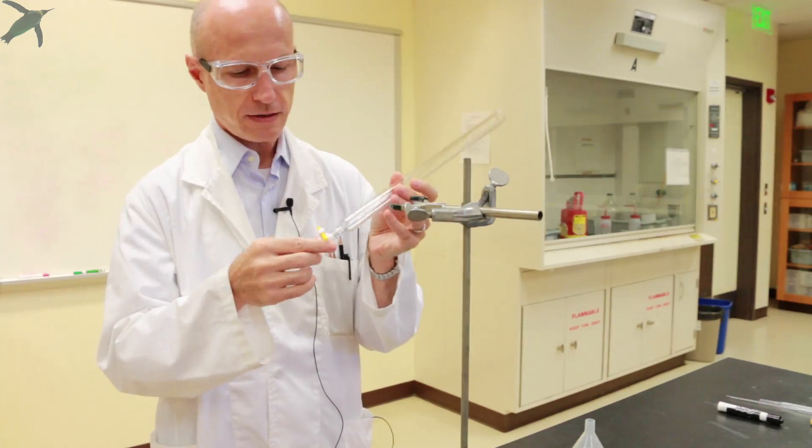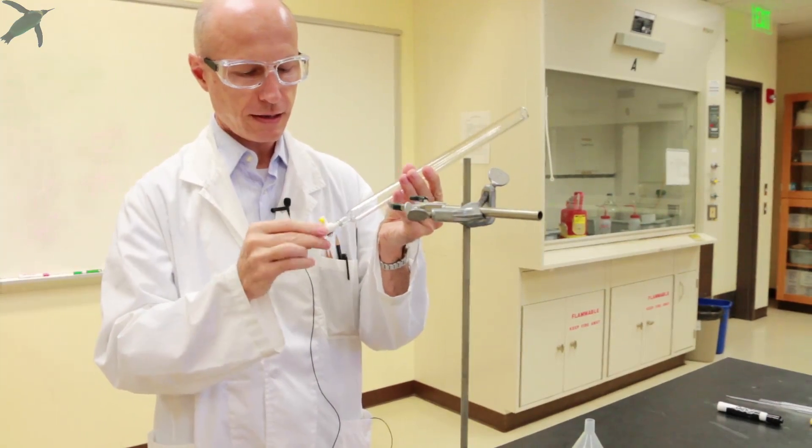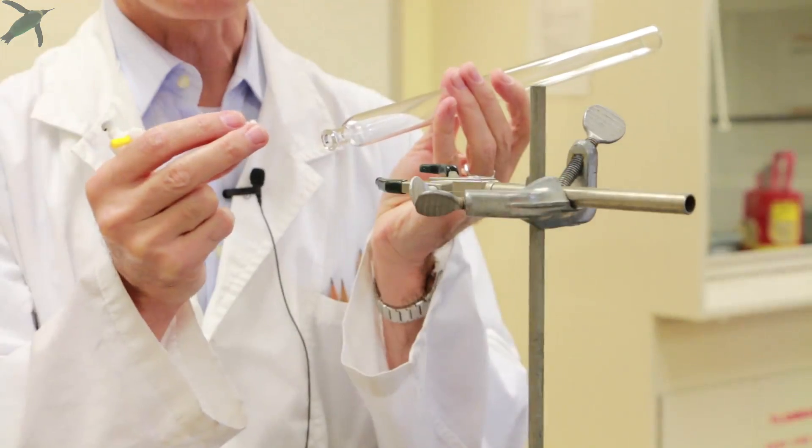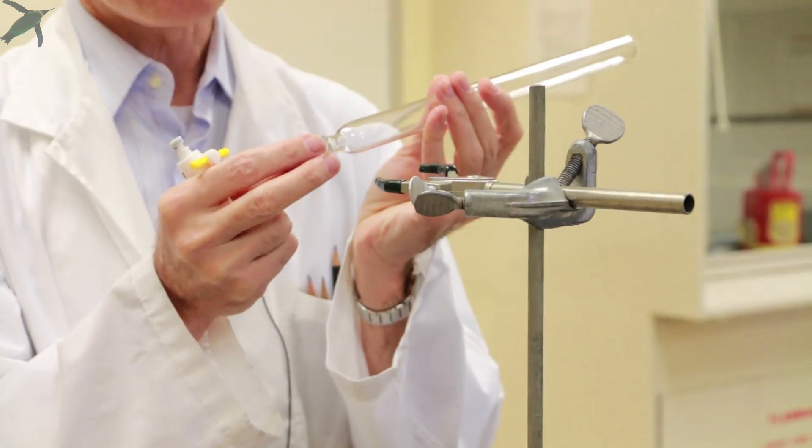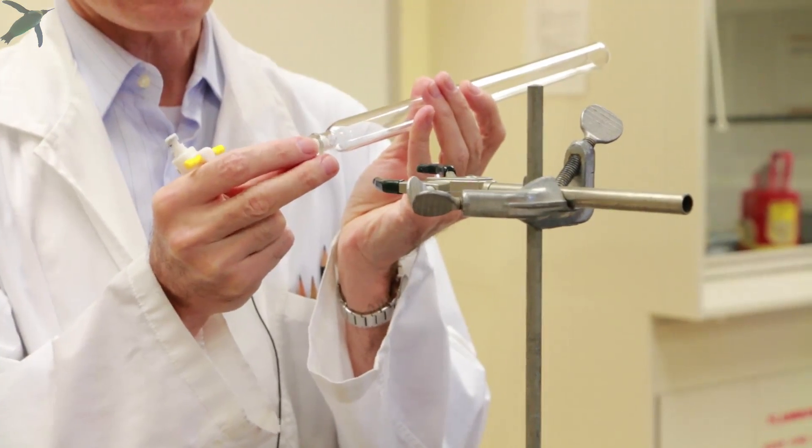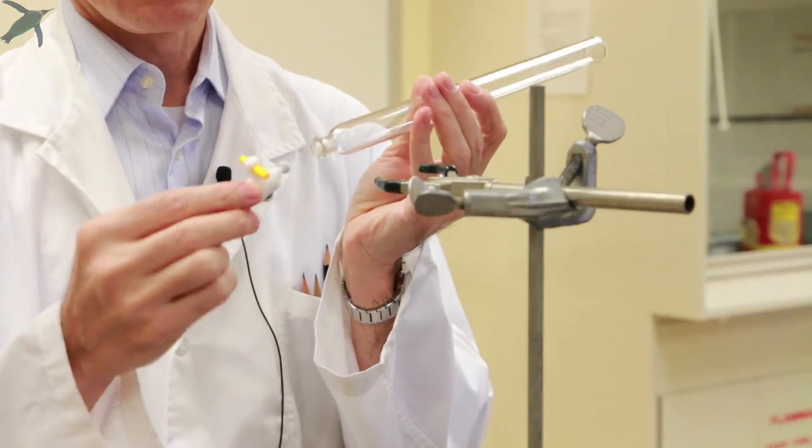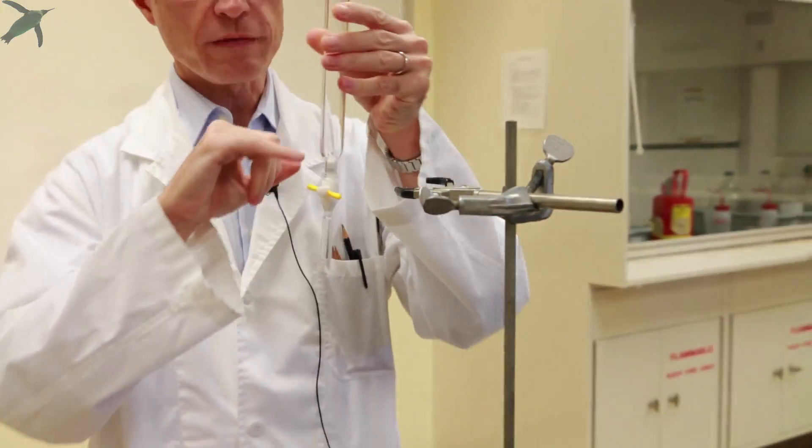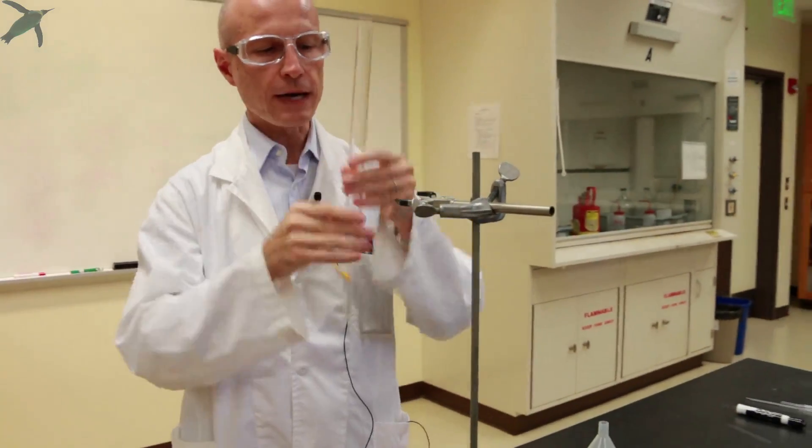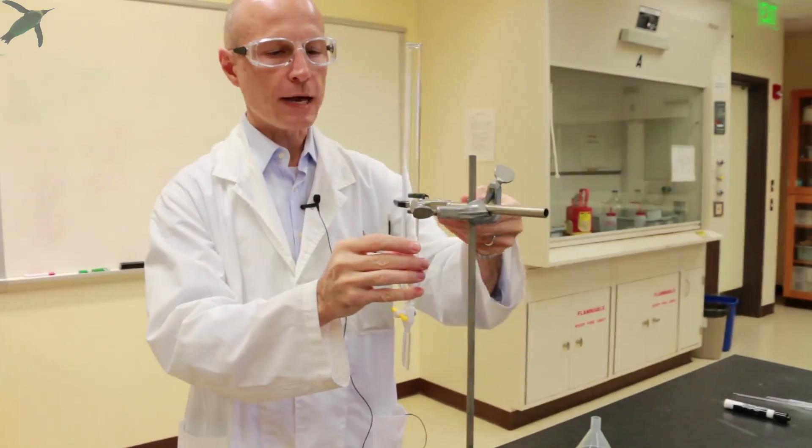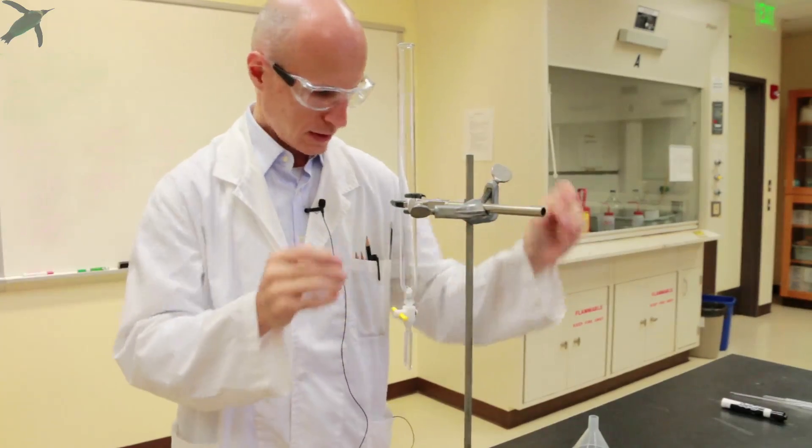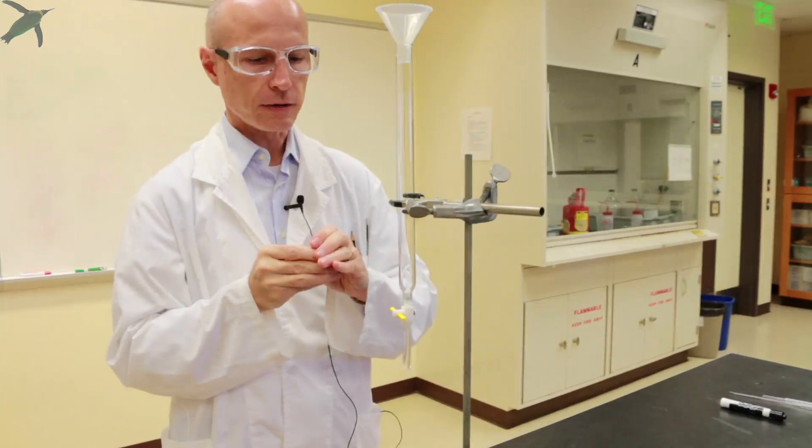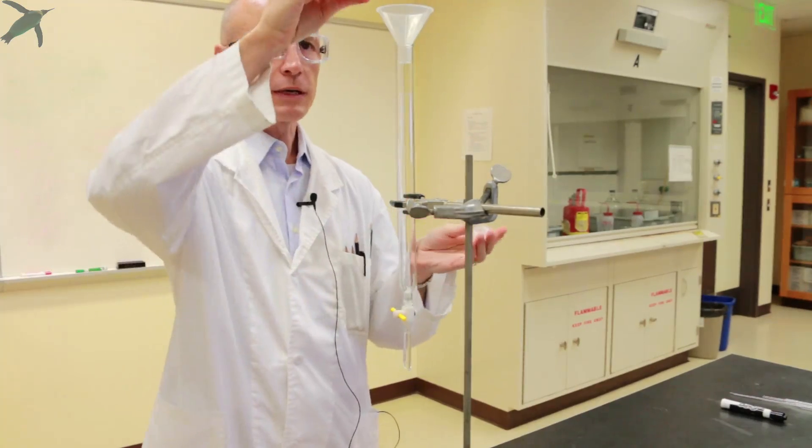The columns we have here are actually very handy because the stopcock comes out. The very first thing you want to do is take a very small cotton plug and put it at the bottom of the column, and then you carefully reinsert the stopcock. This will prevent the sand from going down the stopcock, and then you want to clamp the column. You put a powder funnel on top and you put in sand.